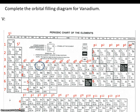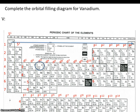Start by writing off the symbol. We're going to start up here in the top left in the periodic table under 1s. So vanadium's first two electrons are located on the first energy level in the S sublevel.